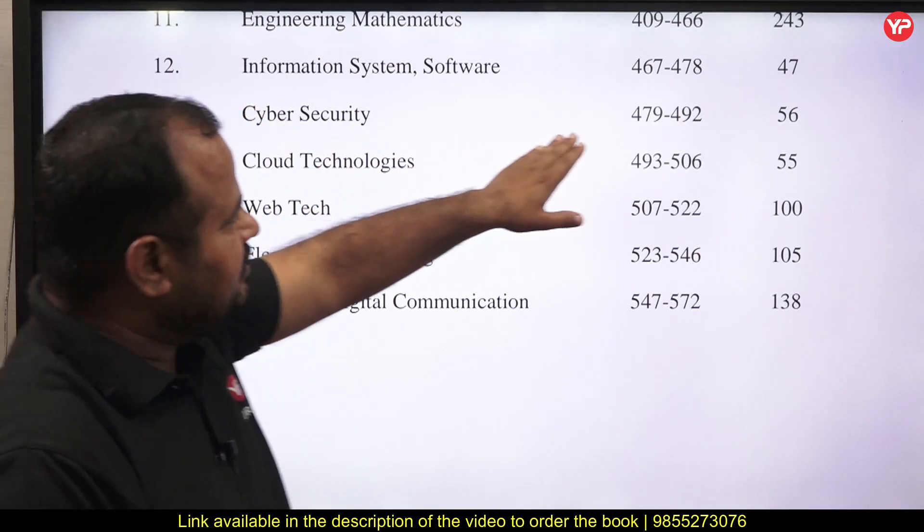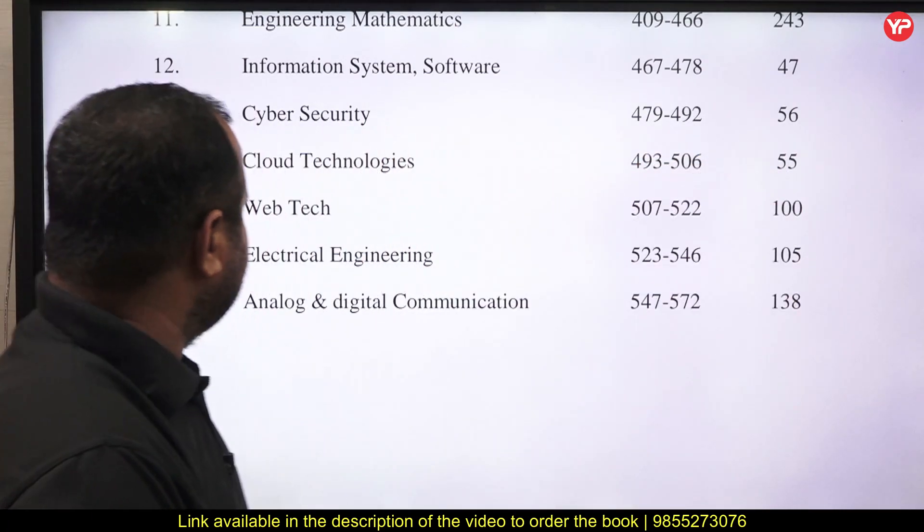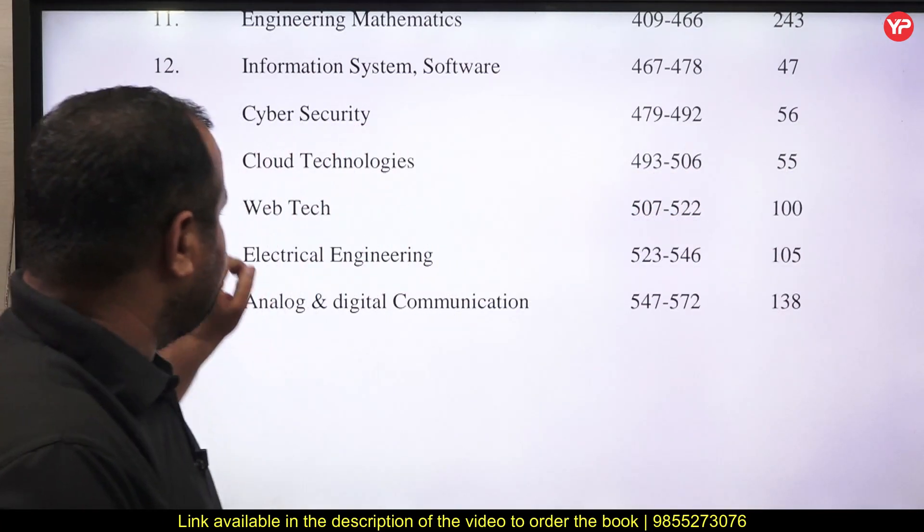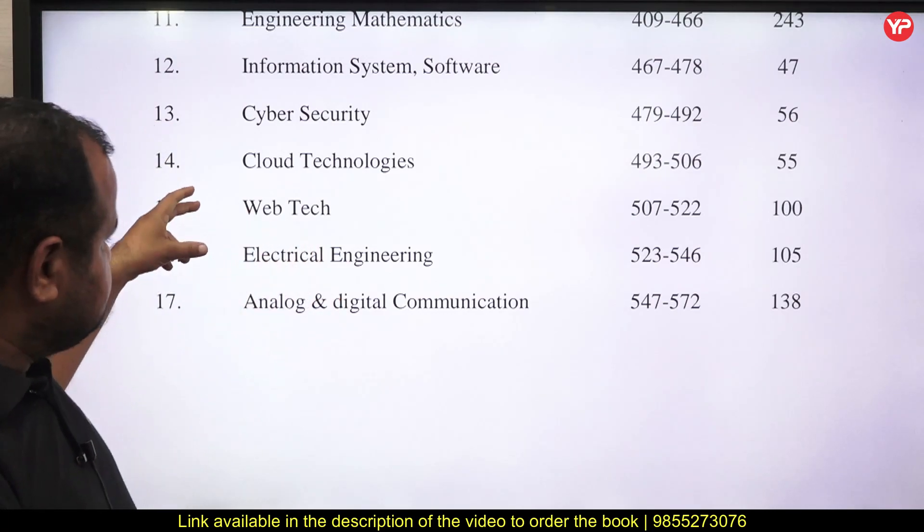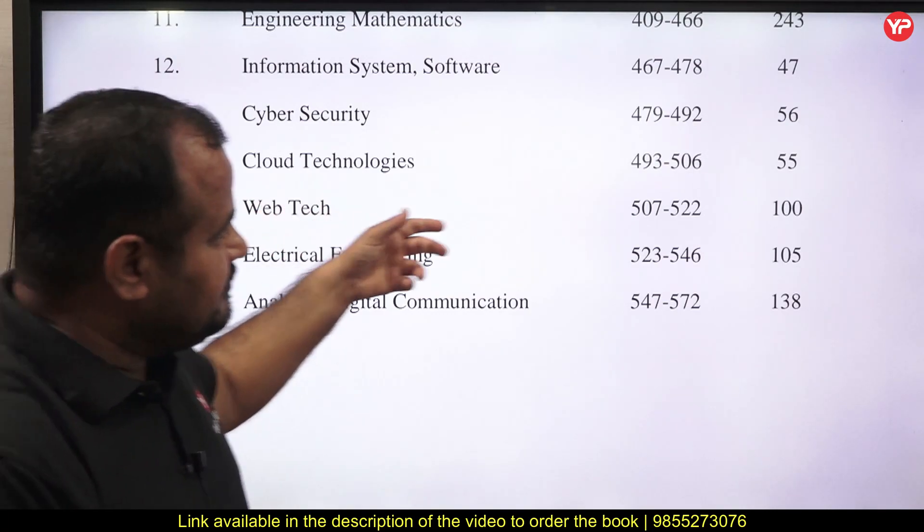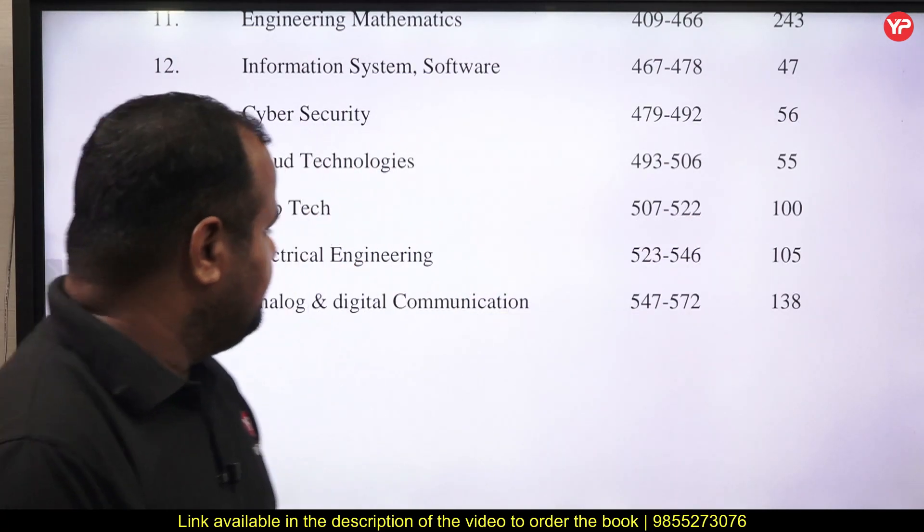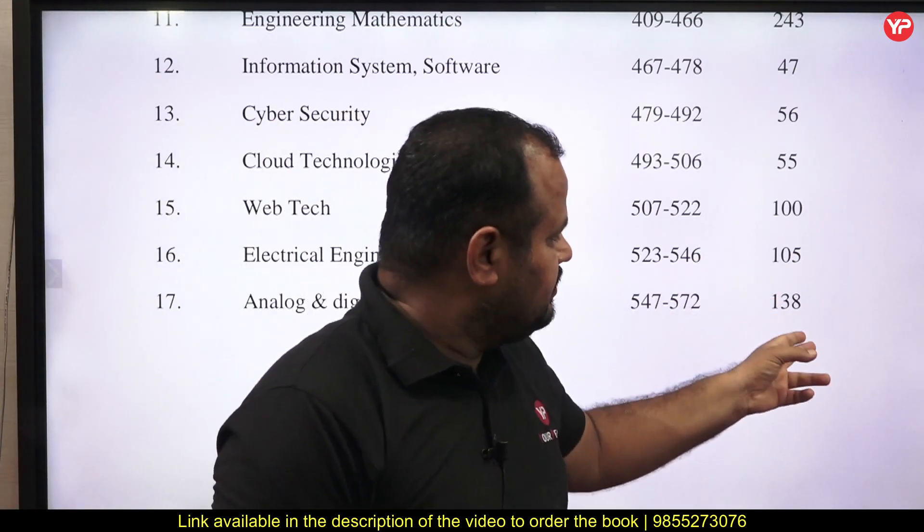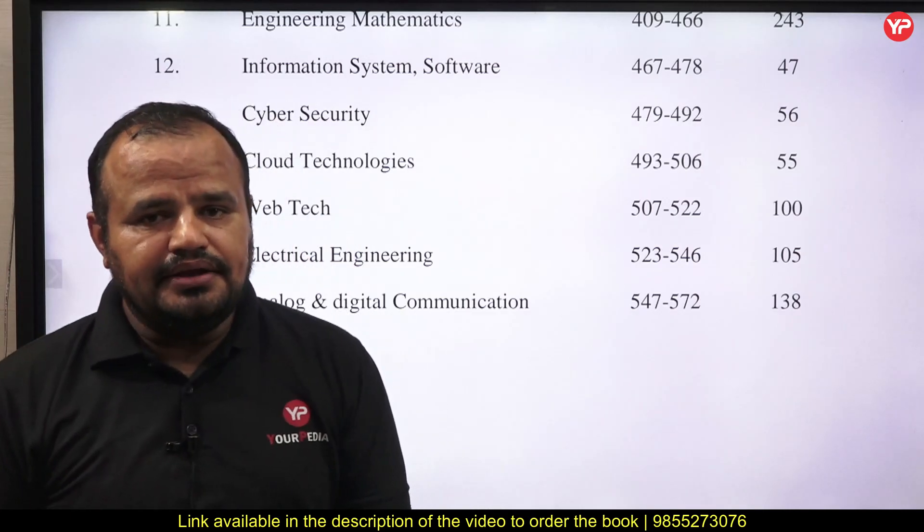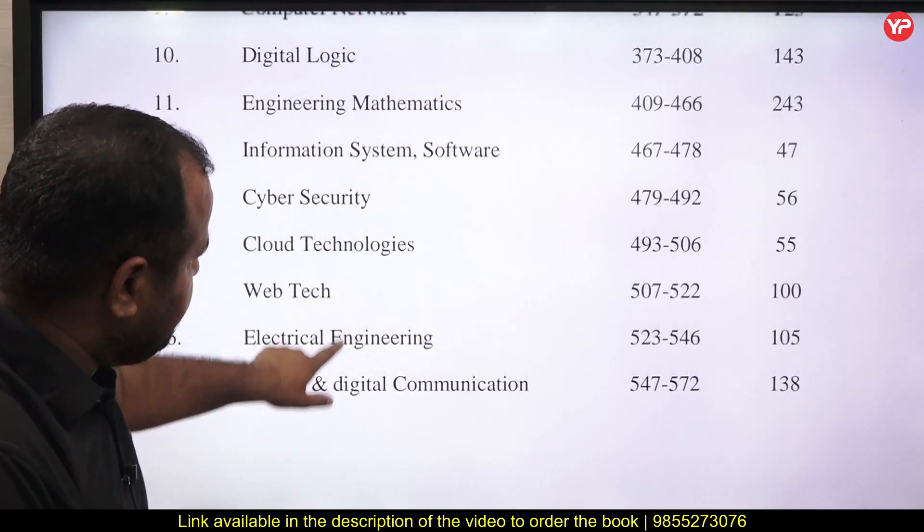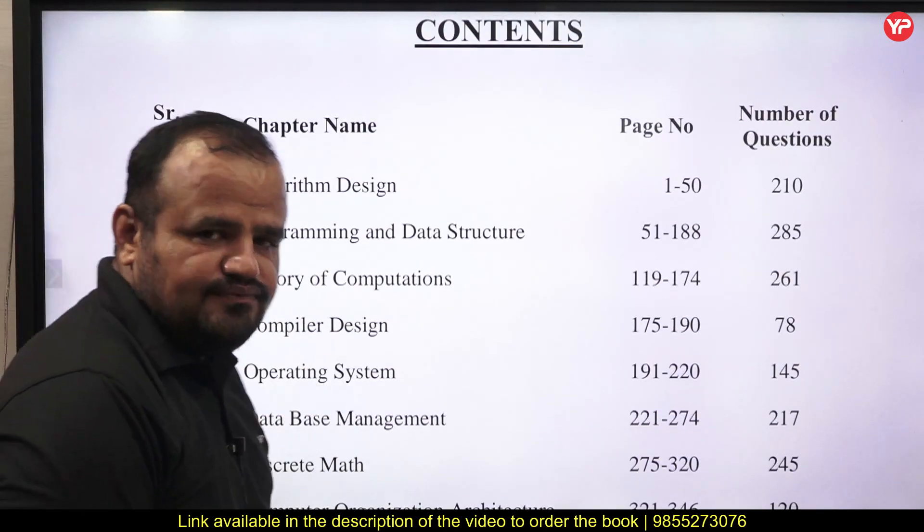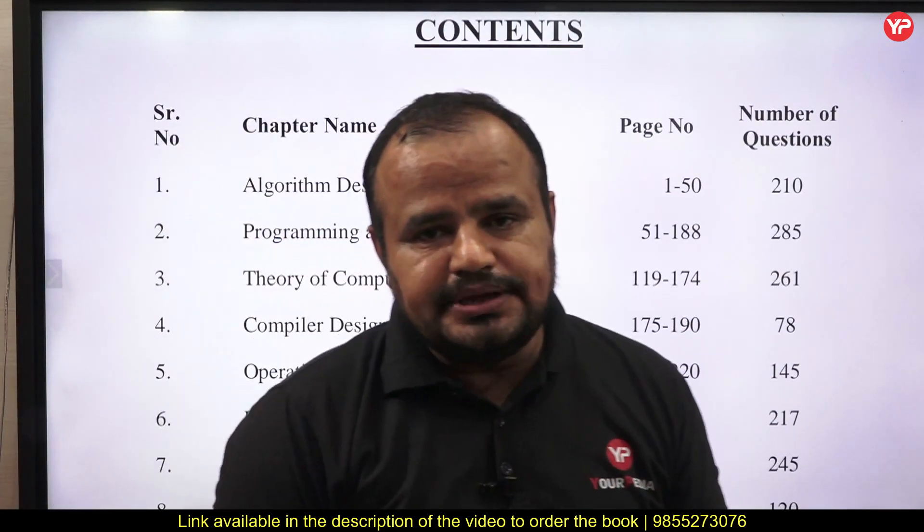Cyber security is an allied topic and main topic. In cyber security, we cover 56 problems. In cloud tech, we cover 55 problems, and in web tech. These are the emerging trends topics. In web tech, we cover 100 problems, then from electrical, almost 250 problems. My dear students, I can ensure you that this book is a complete package for the preparation of all PSUs.